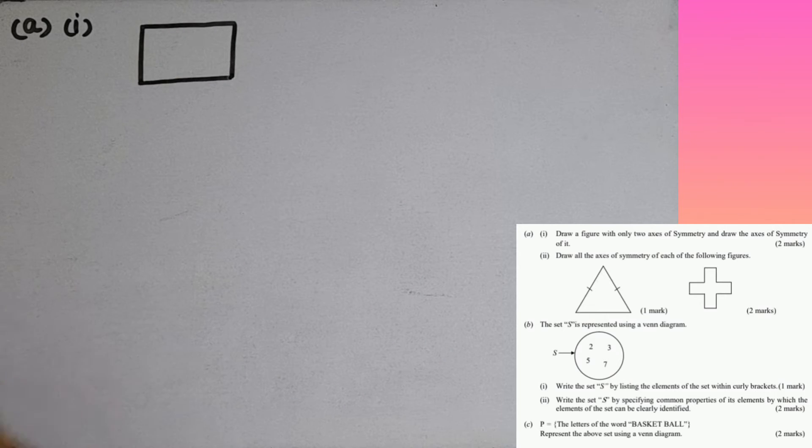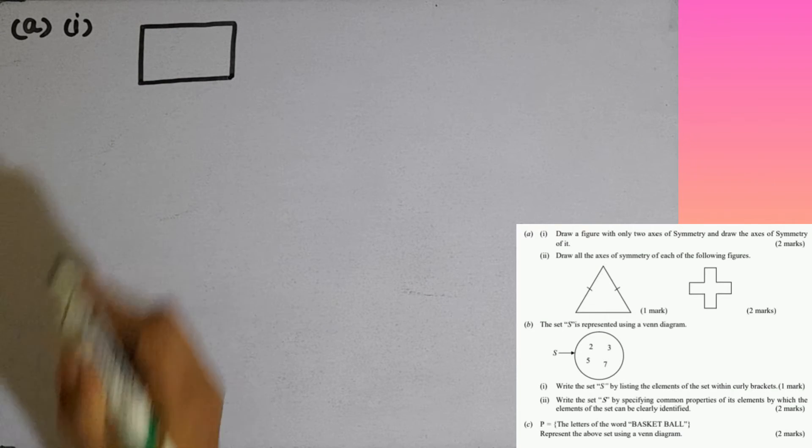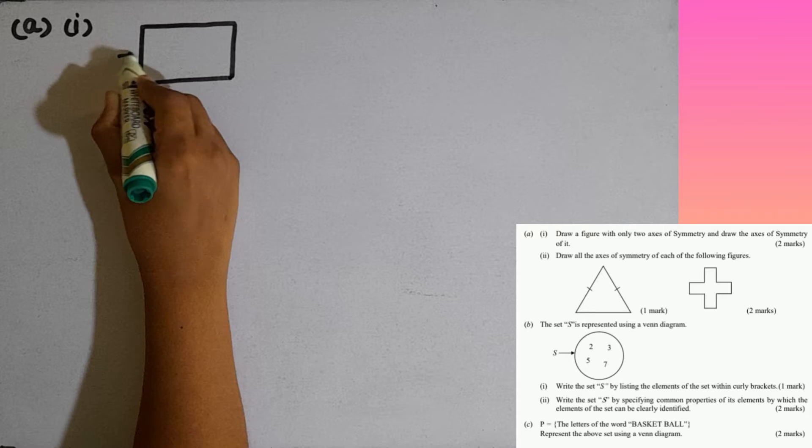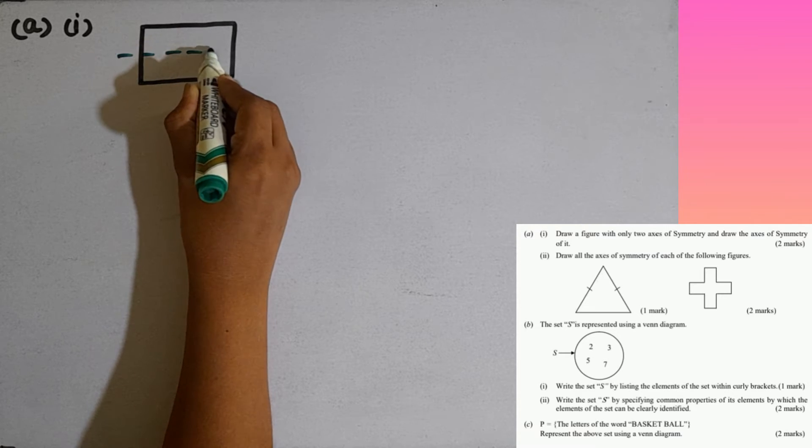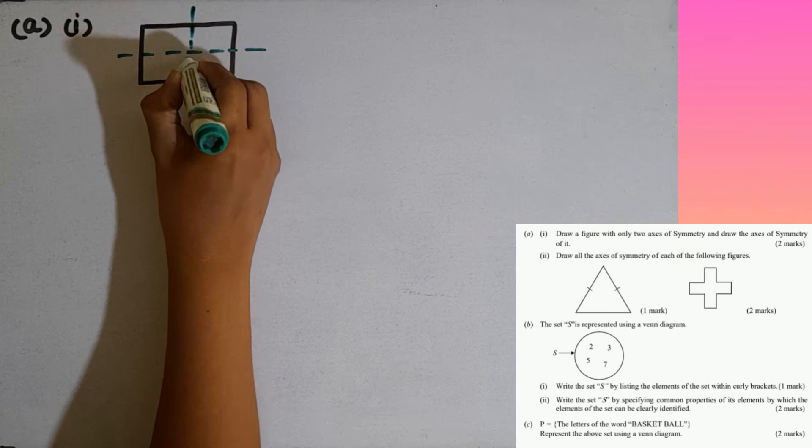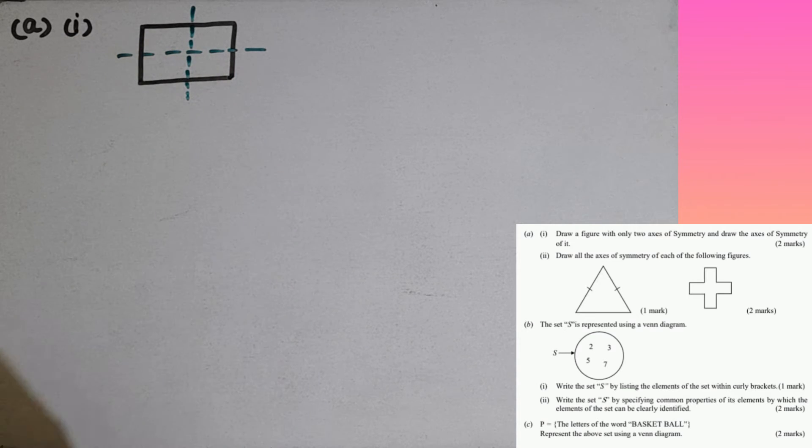Then how many axes of symmetry are there in a rectangle? Lengthwise I can take one axis of symmetry. In breadthwise one axis of symmetry like this. So there are two axes of symmetry.